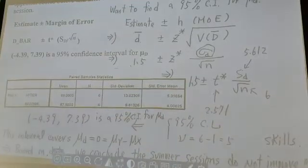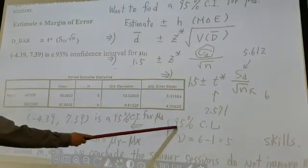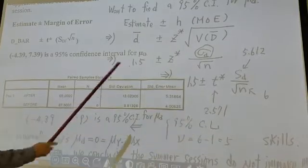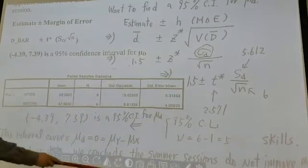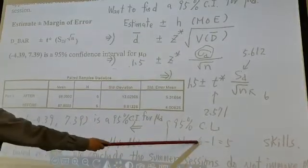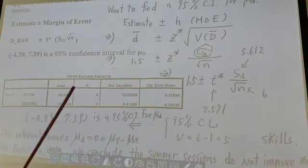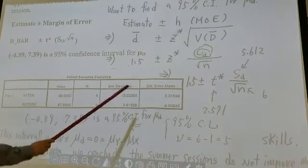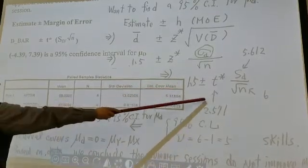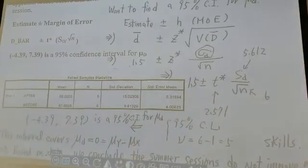t-star is 2.571 because this is a 95% confidence level and the degree of freedom is sample size minus 1, which is 5. Next, I'm going to show you how to use the t-table to find the critical t value.